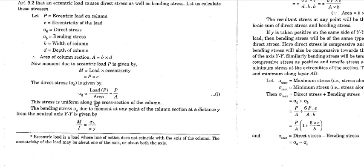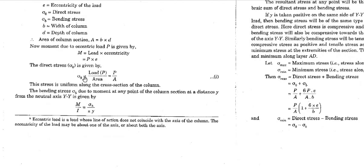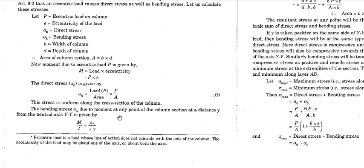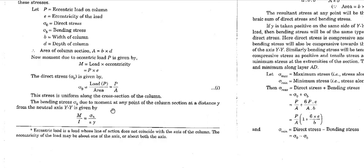The direct stress σ₀ is given by stress equals load per unit area. Here the load is P and the area is the cross-sectional area of the column, so σ₀ = P/A. From bending theory we already know the equation M/I = σ/y, meaning the moment divided by the moment of inertia of the section equals the bending stress σ_b divided by y.